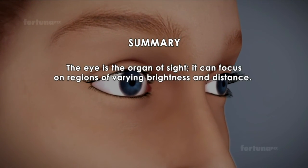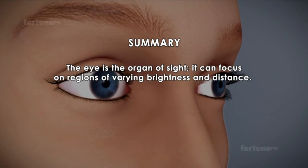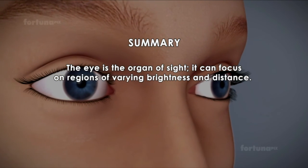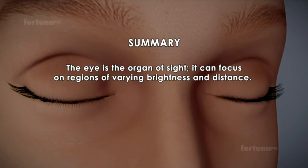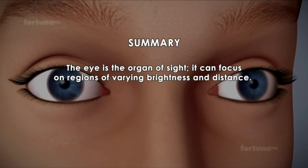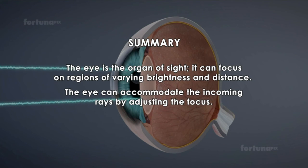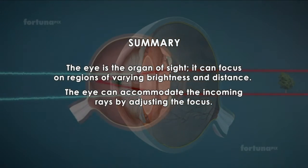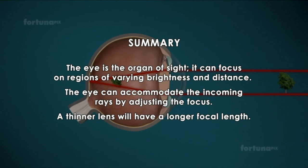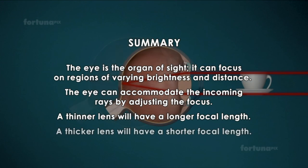The eye is the organ of sight. It can focus on regions of varying brightness and distance. The eye can accommodate the incoming rays by adjusting the focus. A thinner lens will have a longer focal length. A thicker lens will have a shorter focal length.